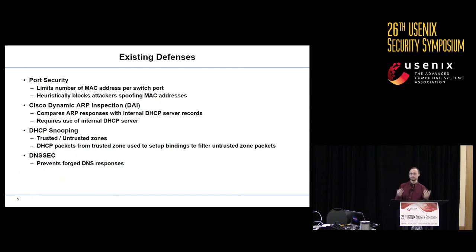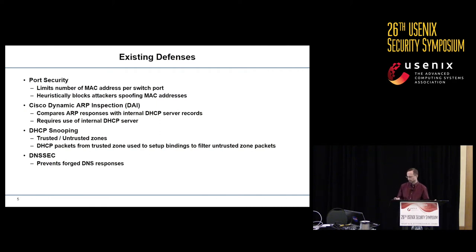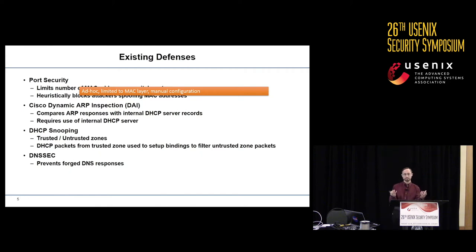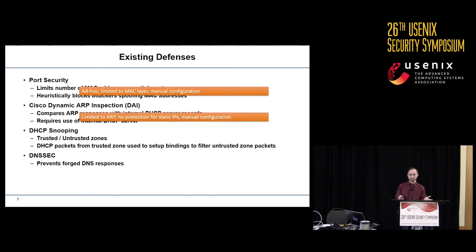There are some existing defenses against these kinds of attacks. Port security is a common one that limits the number of MAC addresses that can be present at a given switch port to prevent MAC address spoofing. But this is a heuristic and ad hoc defense, limited only to protecting MAC addresses, and it requires manual configuration. Cisco and others have technology called dynamic ARP inspection to compare ARP responses with DHCP records, but this provides no protection if you don't use DHCP and is limited only to ARP traffic.